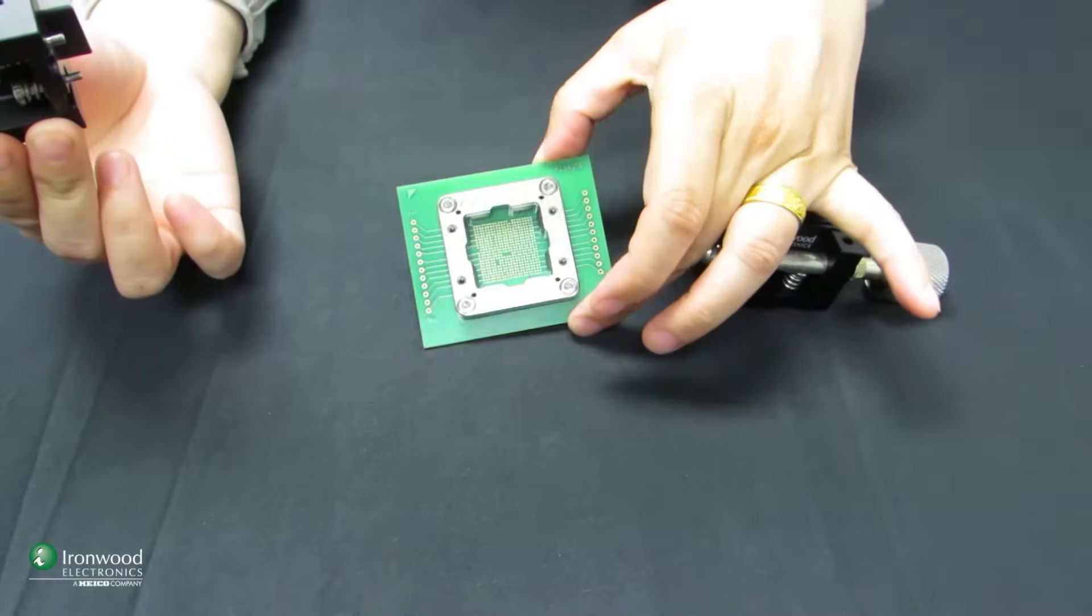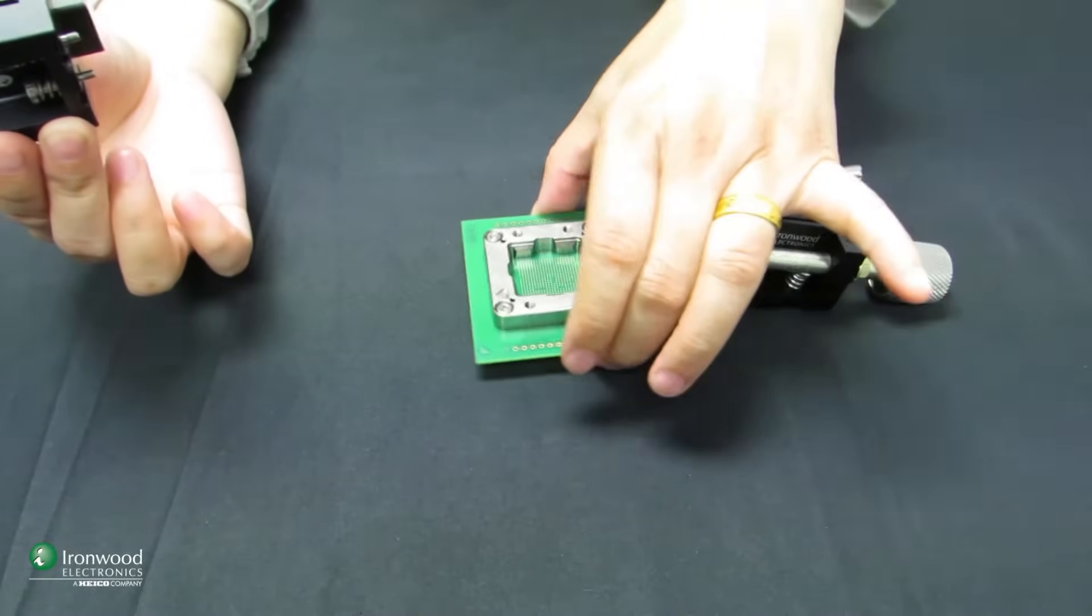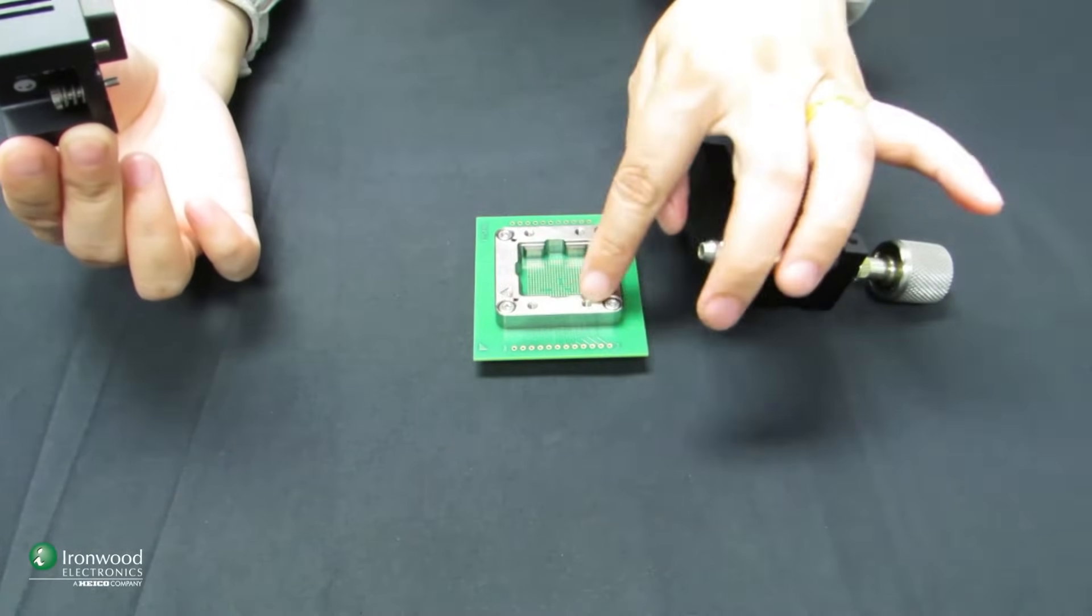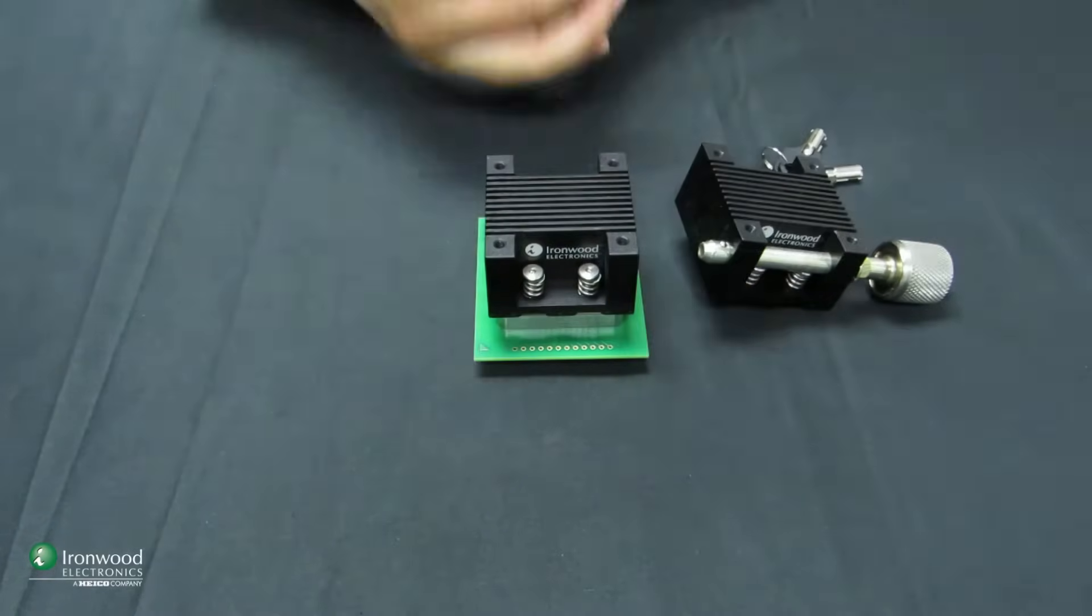I have the socket here. The socket doesn't have any interposer, but just for demonstration purposes. The socket has screws to accept it, and the heat sink will be like this, holding down there.